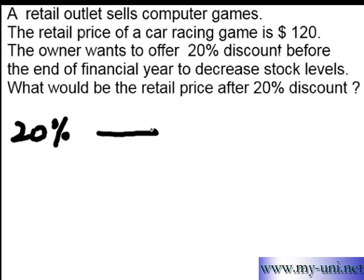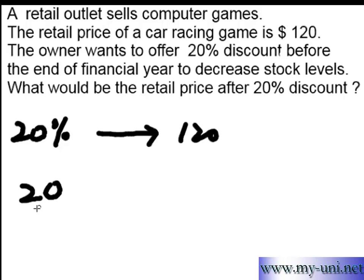What the question is asking is to find 20% of $120, and then subtract that 20% from this amount, so the retail price can be calculated. The simplest way is to convert this percentage into a fraction first. To convert a percentage into a fraction, you divide the percentage by 100, and then multiply this fraction by the amount.